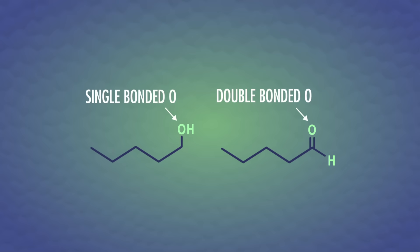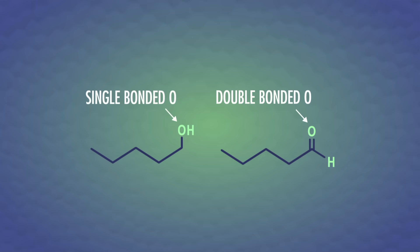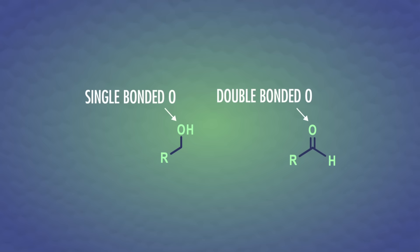The stars of today's episode are functional groups, and as we start naming more complicated molecules, we can stay laser-focused on the functional groups by simplifying the structure. We typically use an R to replace the rest of the carbons that aren't involved in the group. Some of the most intensely studied functional groups in organic chemistry have oxygen atoms, either single-bonded or double-bonded.